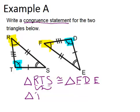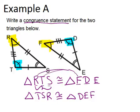So you could have said triangle TSR is congruent to triangle DEF, and that also would be correct. So there's multiple ways to answer this question, and you're right as long as your letters match up correctly.